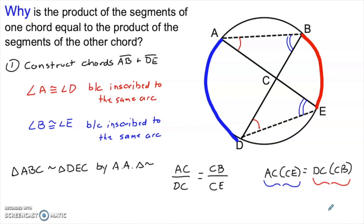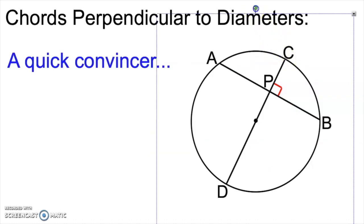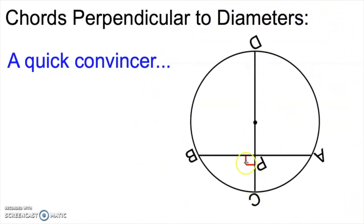For the second part of this video, we're going to look at a specific instance of two chords intersecting where one of those chords is a diameter and they form a right angle between them. Any chord perpendicular to a diameter or radius will be bisected by that diameter or radius — these two segments have to be congruent. As a quick convincer: think about the symmetry of a circle. If the diameter is vertical, a perpendicular chord is horizontal, and by symmetry, whatever is on the left side has to be a mirror image of the right side. So PB has to be the mirror image of AP, meaning these two segments are congruent.